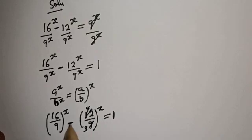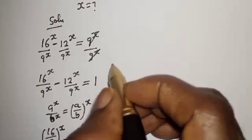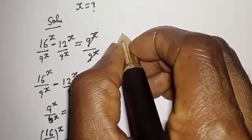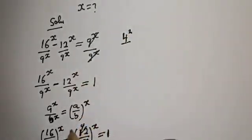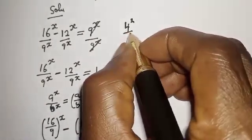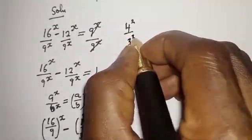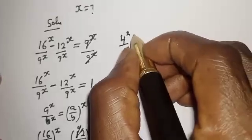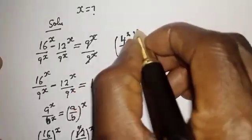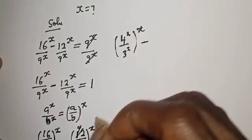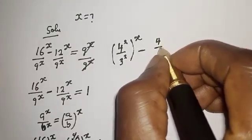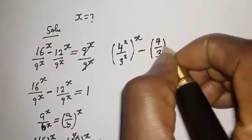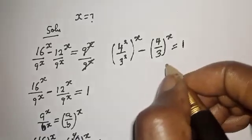Then 16 raised to power x — this can be written as 4 squared over 9 raised to power x, and here is 9 raised to power x. So we get 4 over 3 raised to the power of S is equal to 1.